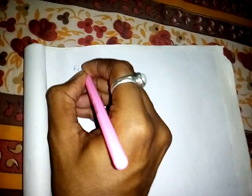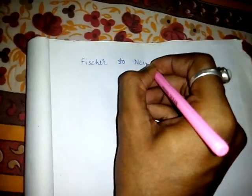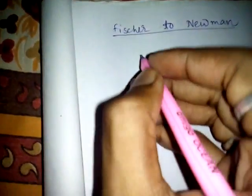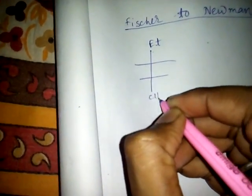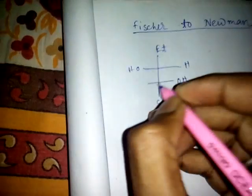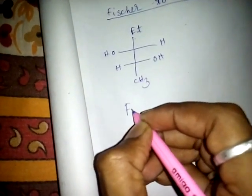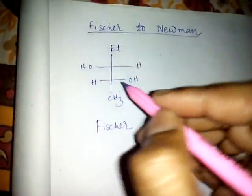Let's see Fischer to Newman projection. At first we take a Fischer projection structure. Yes, it is a Fischer projection structure. Now we will convert it from Fischer projection to Newman projection.